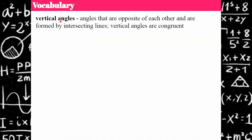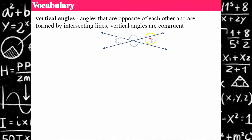You should have learned about vertical angles in grade seven. These are angles that are opposite each other and are formed by intersecting lines, and vertical angles are congruent. The single arc means they have the same measure, and the double arc notes that the other pair is also congruent and has the same measure. This is a single arc and this is a double arc because they have different measures from each other — but within each pair, the vertical angles are equal.